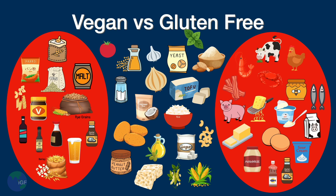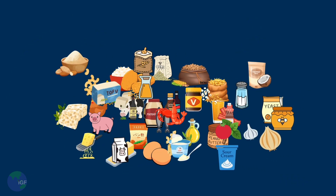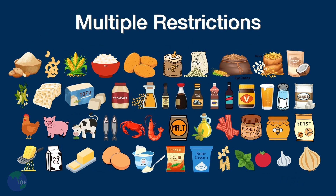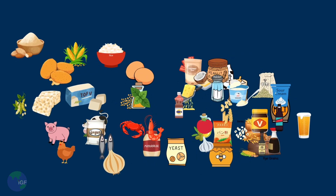Vegan diets tend to include a lot of gluten-containing foods, while gluten-free diets tend to include meat, dairy, and eggs. Sometimes people have more than one dietary restriction. For example, it is common for people newly diagnosed with celiac disease to need to be dairy-free in addition to being gluten-free as their gut heals.